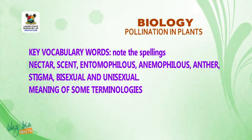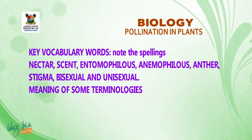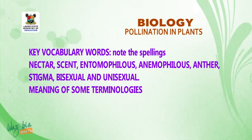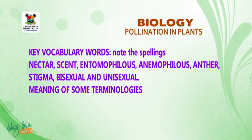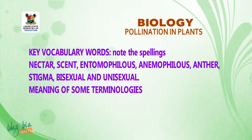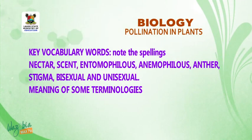I have: Nectar — N-E-C-T-A-R. Entomophilous — E-N-T-O-M-O-P-H-I-L-O-U-S. Anemophilous — A-N-E-M-O-P-H-I-L-O-U-S. Anther — A-N-T-H-E-R. Stigma — S-T-I-G-M-A. Bisexual — B-I-S-E-X-U-A-L. And Unisexual — U-N-I-S-E-X-U-A-L.